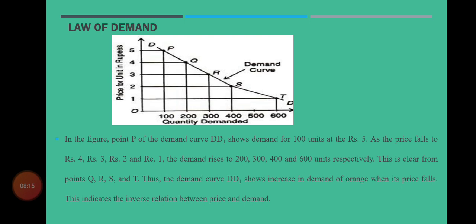یہ graph انہی values کی مدد سے بنایا گیا ہے جو کہ ہم نے demand schedule میں ظاہر کی۔ Point P وہاں کی first values کو ظاہر کرتا ہے: orange کی price ہے 5 rupees اور 100 oranges demand کیے جا رہے ہیں کیونکہ 5 rupees ایک زیادہ قیمت ہے۔ اگر price 5 سے کم ہو کر 4 ہو جائے تو demand بڑھ جاتی ہے — لوگوں کی purchasing power بڑھ جاتی ہے اور وہ 200 units خرید سکتے ہیں، جیسا کہ point Q سے ظاہر ہے۔